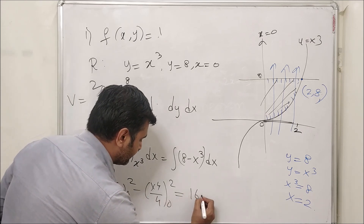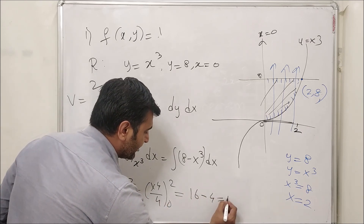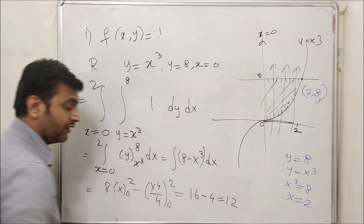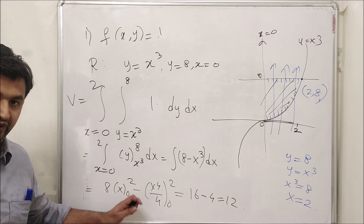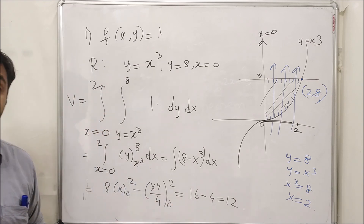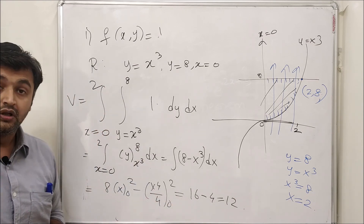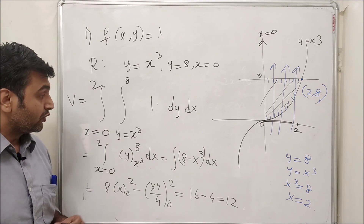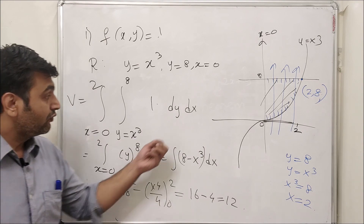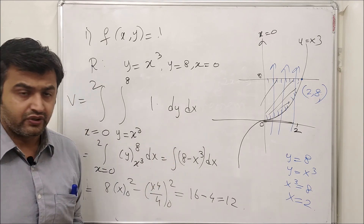Integrating 1 with respect to y gives y evaluated from x³ to 8, which is 8 − x³. So we have the integral from 0 to 2 of (8 − x³) dx. Integrating: [8x − x⁴/4] from 0 to 2 = 16 − 4 = 12. Provided my calculations are correct, the volume is 12.